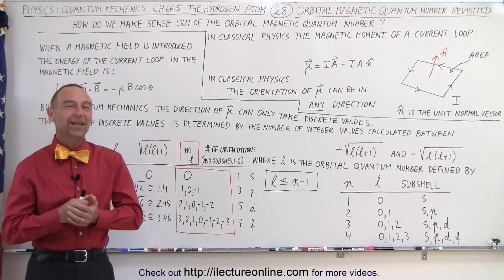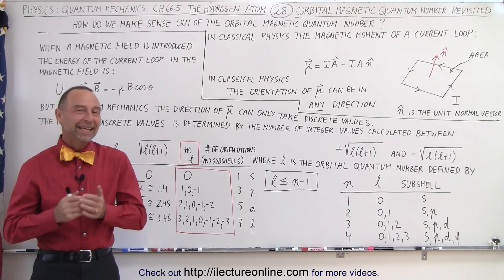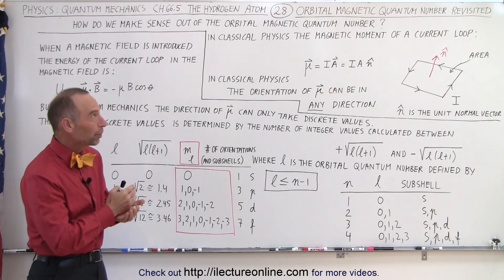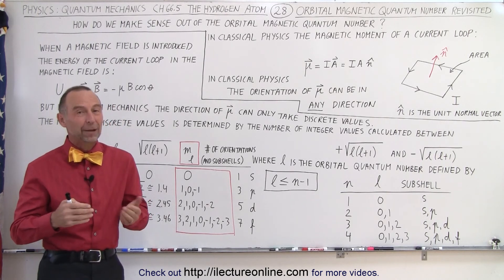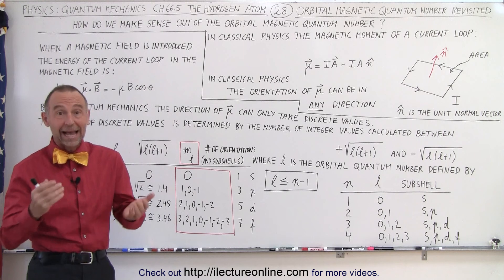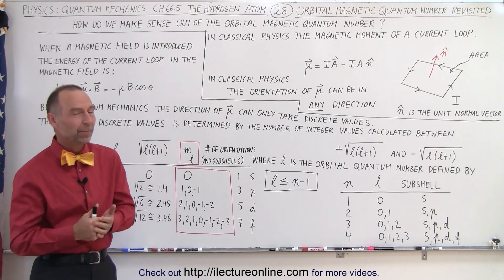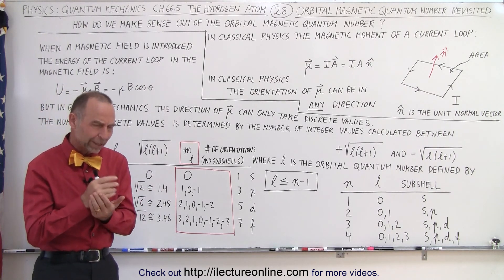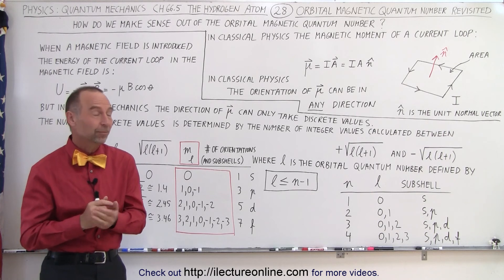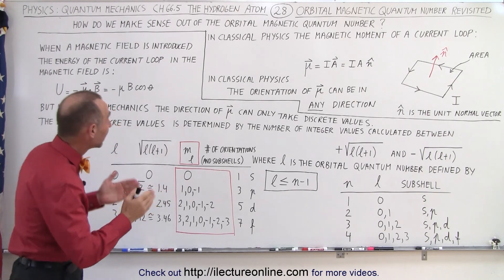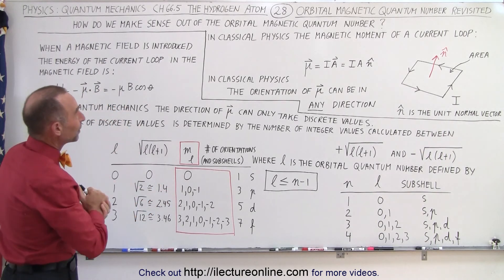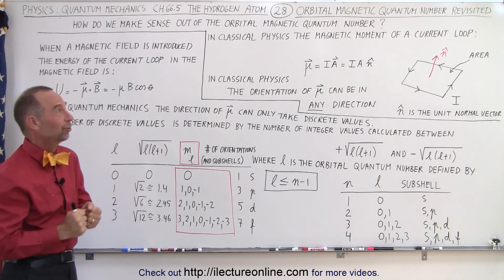Welcome to my lecture online. In this video we're going to explore what we call the orbital magnetic quantum number and we're going to try to actually make sense out of what that actually is and what it represents — not so much what it is, but actually what it represents. How do we make sense out of the orbital magnetic quantum number? That's the question.